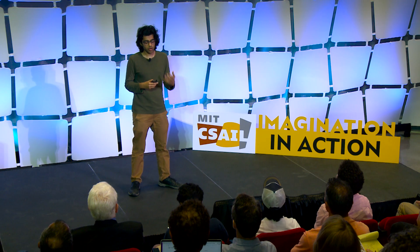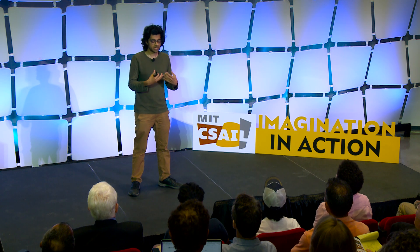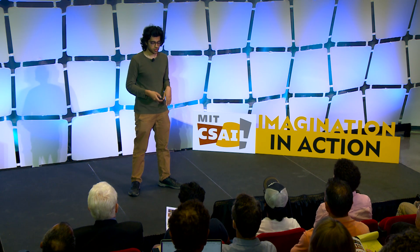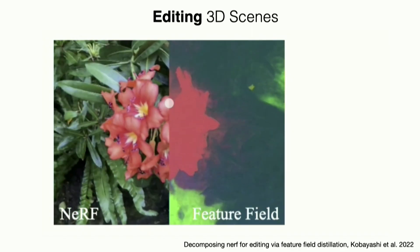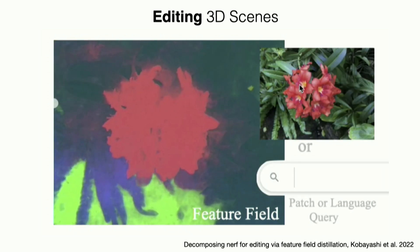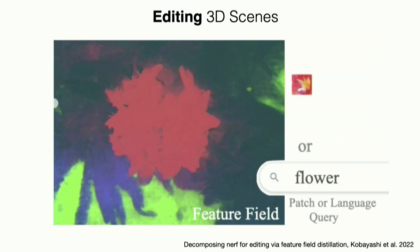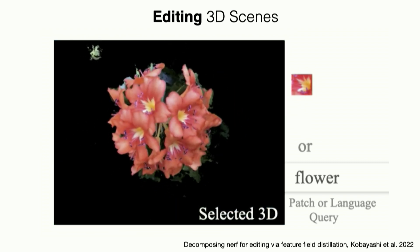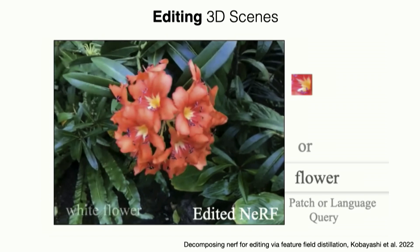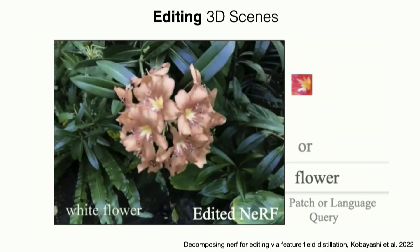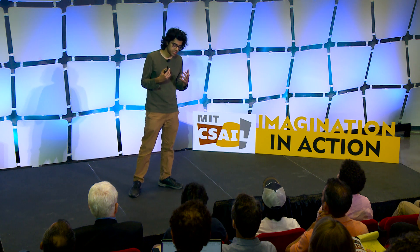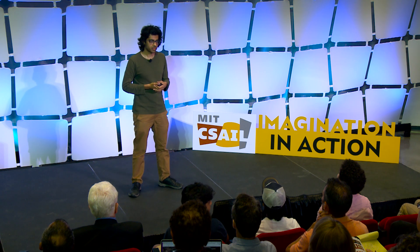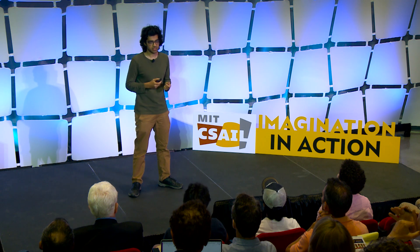But this just gives us the appearance. What if we want to change the appearance or structure of the scene? It turns out we can not only lift the color information, but we can also enable semantic scene understanding in 3D. We learned semantic features in 3D such that we can search based on text — we can search for flowers, it identifies the corresponding region in the 3D scene, and we can go ahead and change the appearance of the flowers. These kinds of applications are very relevant in computer graphics where we want to create and edit 3D assets.